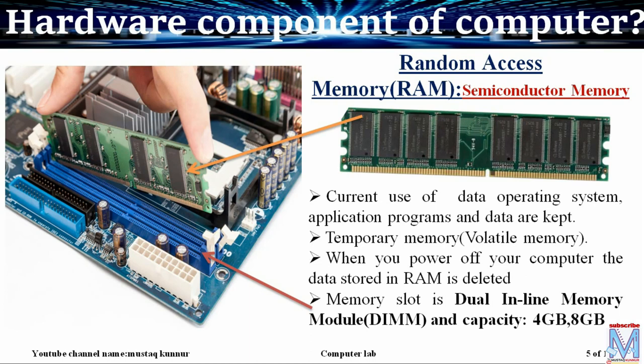Random access memory is also known as temporary memory or volatile memory. That means the data stored on the RAM is going to be deleted once the power goes off, hence it is known as temporary or volatile memory. In the figure we can see that this RAM is connected on the RAM slot.